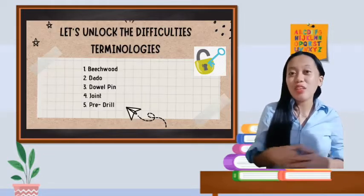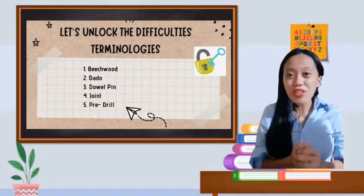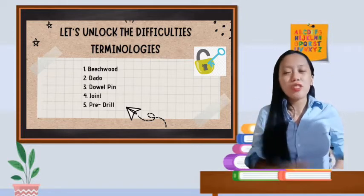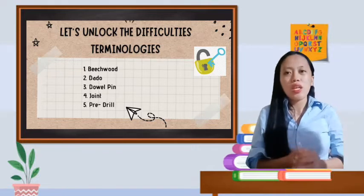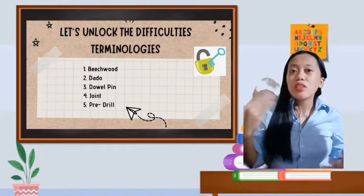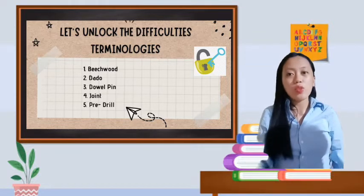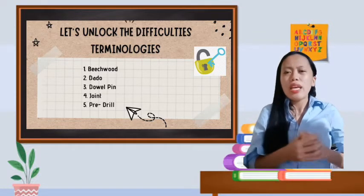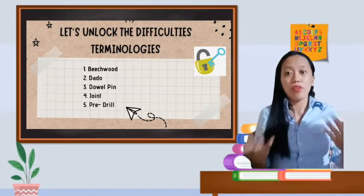Let's proceed to the Unlocking Difficulties. Let's unlock the Unlocking Difficulties terminologies. First, when we say beechwood, it is derived from beech trees located in northern continents. It is a reddish-brown wood that can be incorporated to the many areas of the house. It is often for making chairs, tools, hardware, and floors.